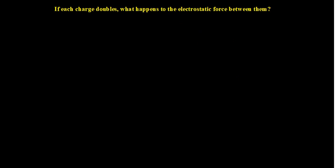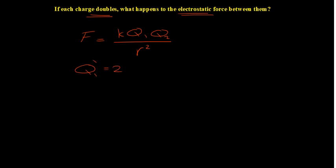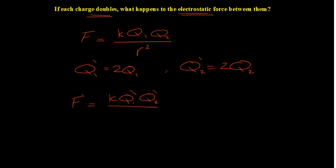The third example: if each charge doubles, what happens to the electrostatic force between them? Following Coulomb's law, the force is k·q1·q2 over r². The new q1 is 2q1 and the new q2 is 2q2. The distance between the two charges is unchanged. The new force is k·(2q1)·(2q2) over r².